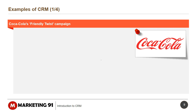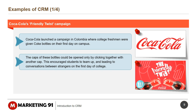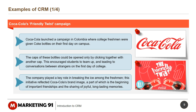Examples of CRM: Coca-Cola's Friendly Twist Campaign. Coca-Cola launched a campaign in Colombia where college freshmen were given Coke bottles on their first day on campus. The caps of these bottles could only be opened by clicking together with another cap, encouraging students to team up and leading to conversations between strangers. The company played a key role in breaking the ice, reflecting Coca-Cola's brand image of fostering important friendships and sharing joyful, long-lasting memories.